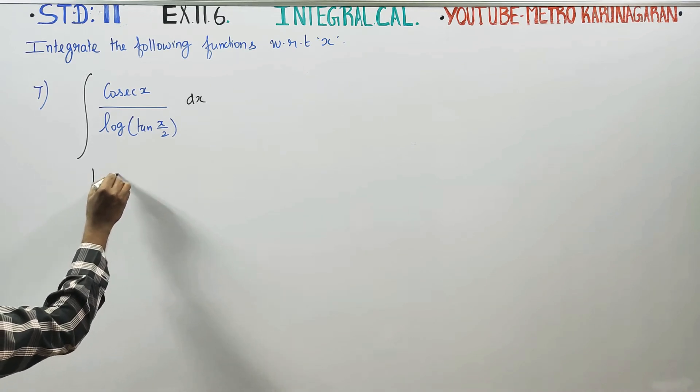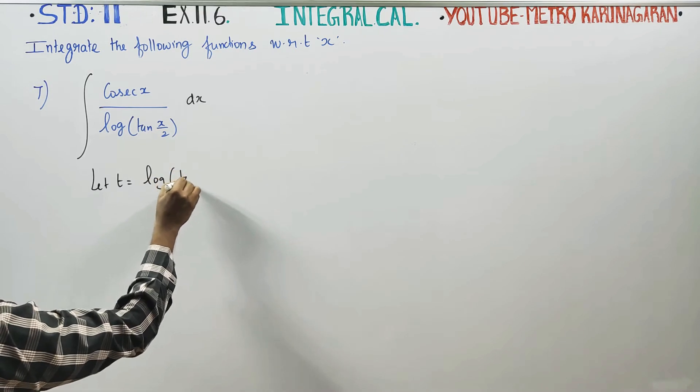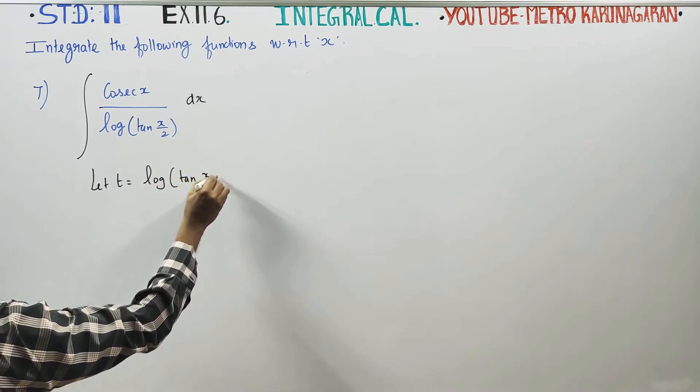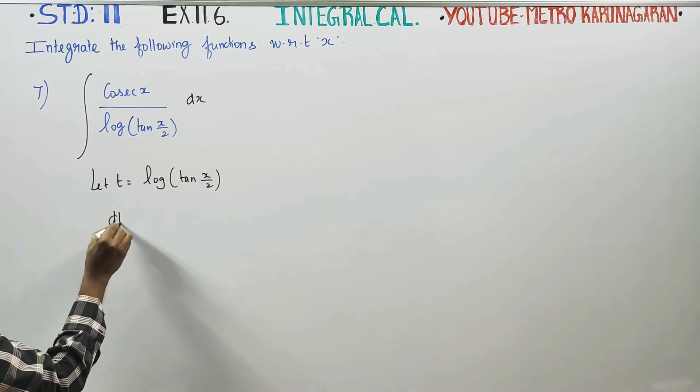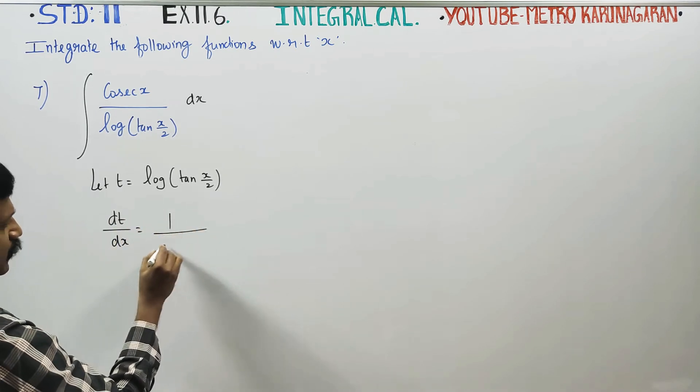Let t equals logarithm of tan x by 2. Now I am going to differentiate this with respect to x. dt by dx: log differentiation gives 1 by tan.